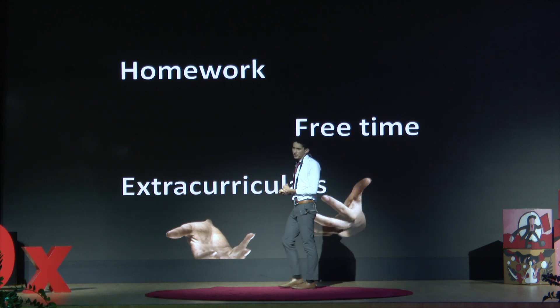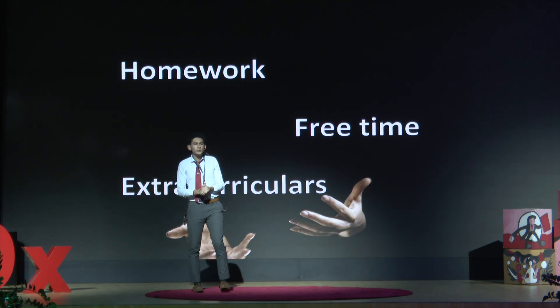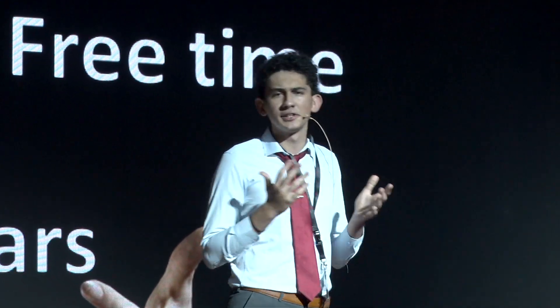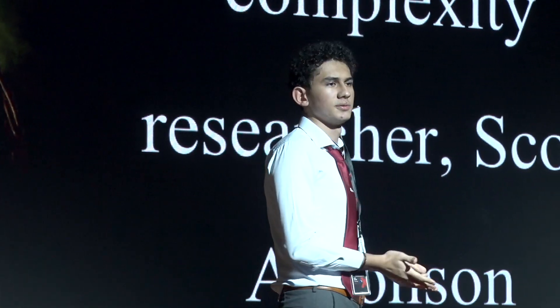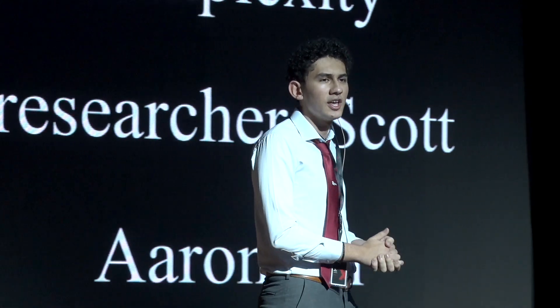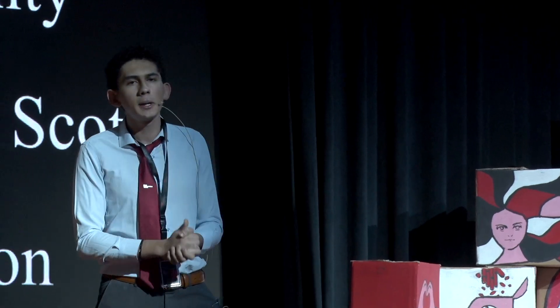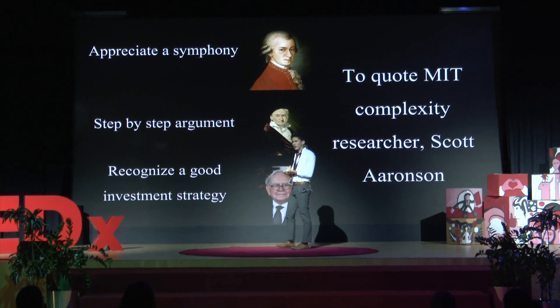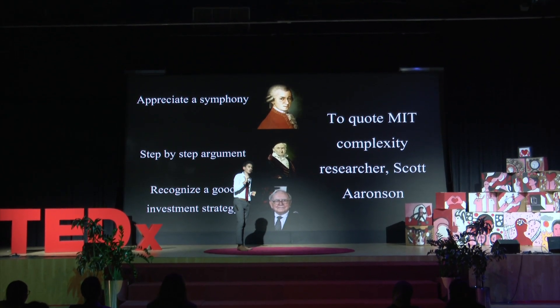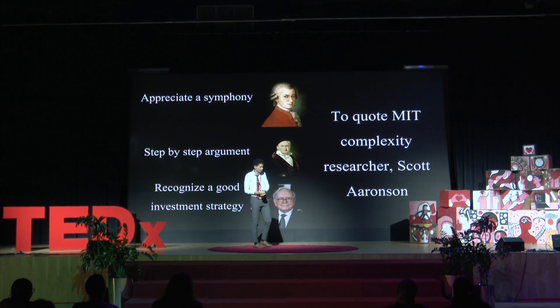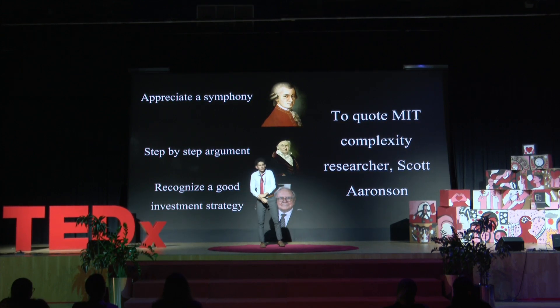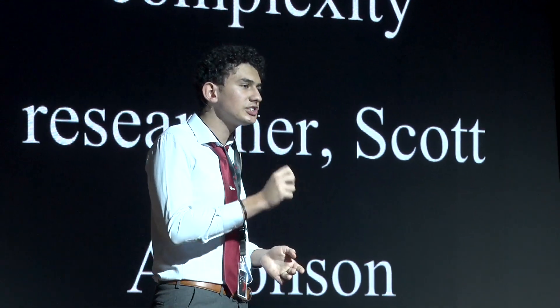To quote MIT complexity researcher Scott Aaronson: 'If P were equal to NP, the world would be a profoundly different place. There would be no special value in creative leaps, no fundamental gap between finding a solution and recognizing it once it's found. Everyone who could appreciate a symphony would be Mozart. Everyone who could follow a step-by-step argument would be Gauss. Everyone who could recognize a good investment strategy would be Warren Buffett.' Suggesting that if P equals NP, everyone would possess extraordinary problem-solving skills, erasing the distinction between recognizing a solution and finding it — making genius universally attainable.